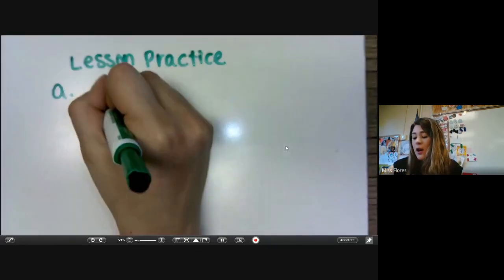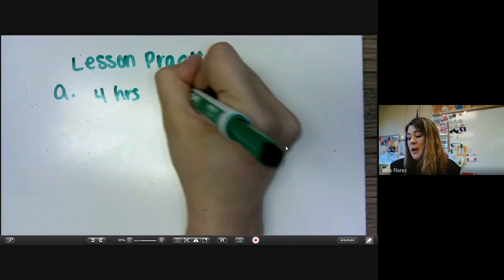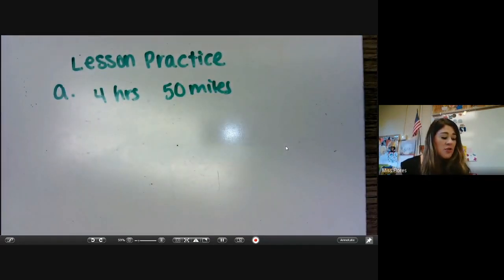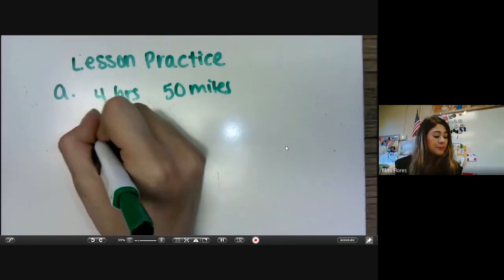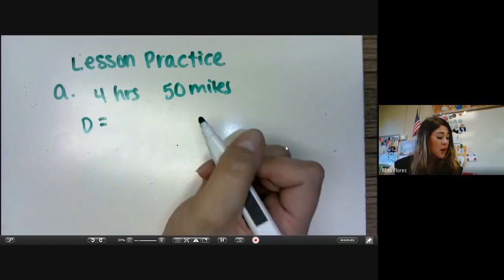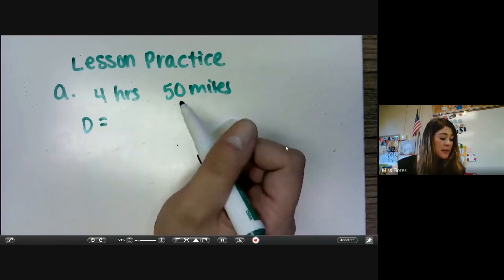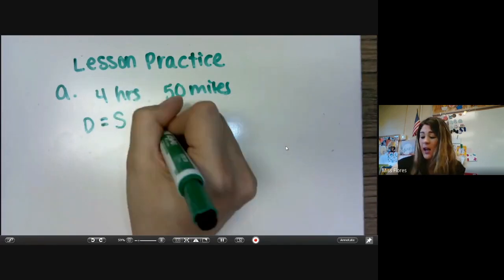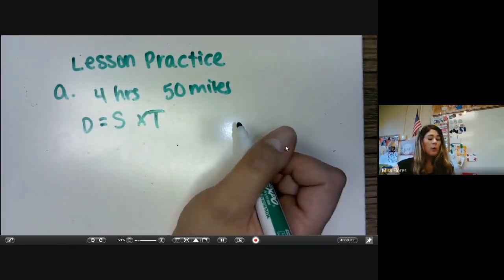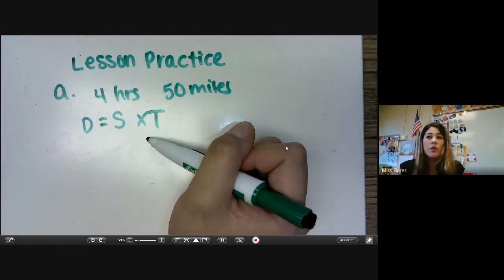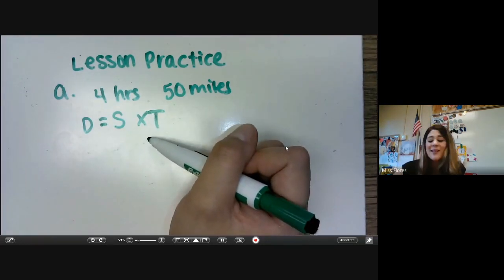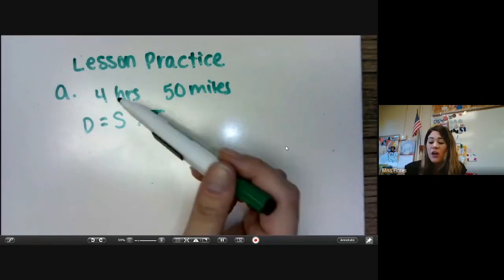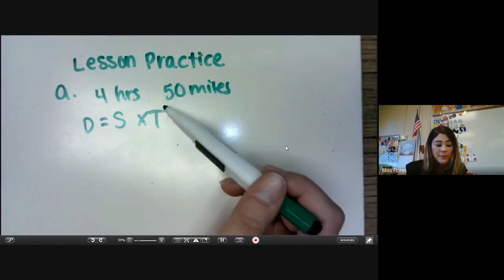Lesson practice A says Genevieve drove for four hours at a speed of 50 miles. How far did she drive? So basically, we want to know the distance of how far she drove. So that means we could multiply her speed by time. And that is the equation that we're looking for. This formula is what we're looking for. So you need to figure out what the question is asking us. It's asking us for the distance. We want to know how far she went, and we know how long it took her, the time, and we know how fast she was going.